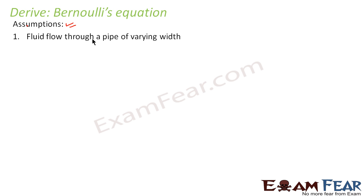The first assumption is fluid flow through a pipe of varying width. That means we will consider that a fluid is flowing through a pipe of varying width — the cross-sectional area of the pipe is not constant throughout.